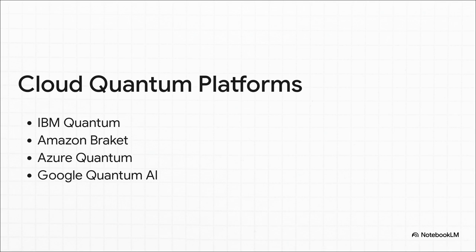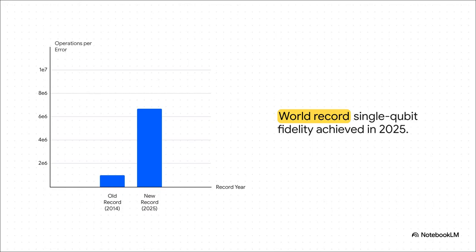They all offer these cloud platforms. They give you access to all different kinds of quantum hardware, letting researchers, developers, and even students experiment and really push the boundaries of what's possible in this noisy era. And look, it's not just about working around the noise. We are actively reducing it. The progress has been dramatic. Just recently, researchers hit a new world record for single qubit fidelity, getting an error rate of just one in over 6.7 million operations. That is a massive leap forward in quality, and it shows that we are steadily winning the fight against that decoherence problem.